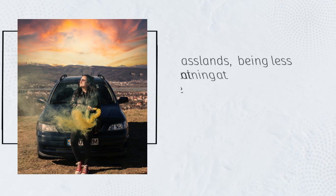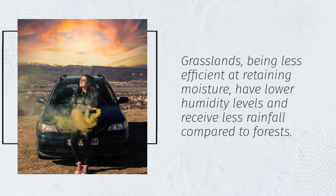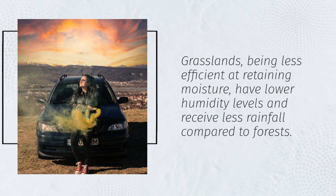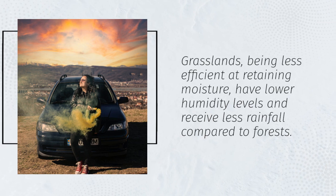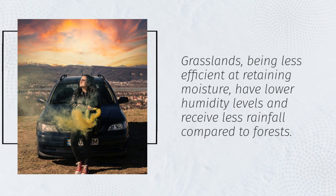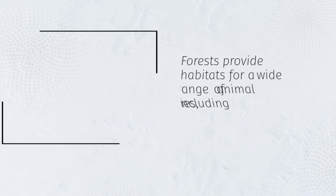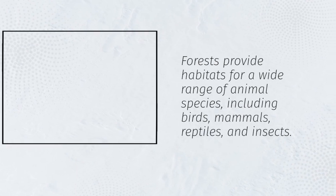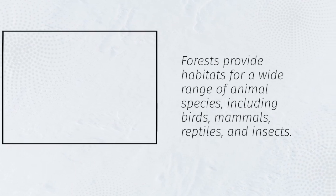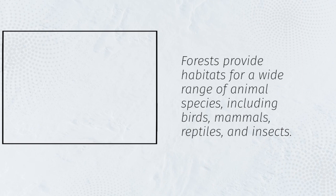Grasslands, being less efficient at retaining moisture, have lower humidity levels and receive less rainfall compared to forests. Forests provide habitats for a wide range of animal species, including birds, mammals, reptiles, and insects.